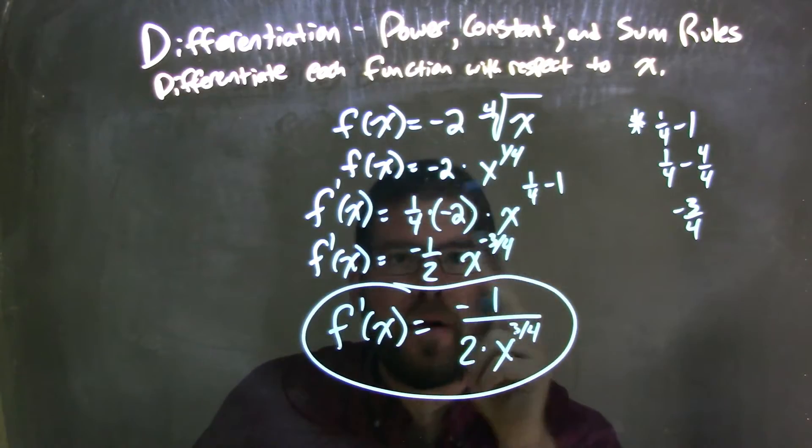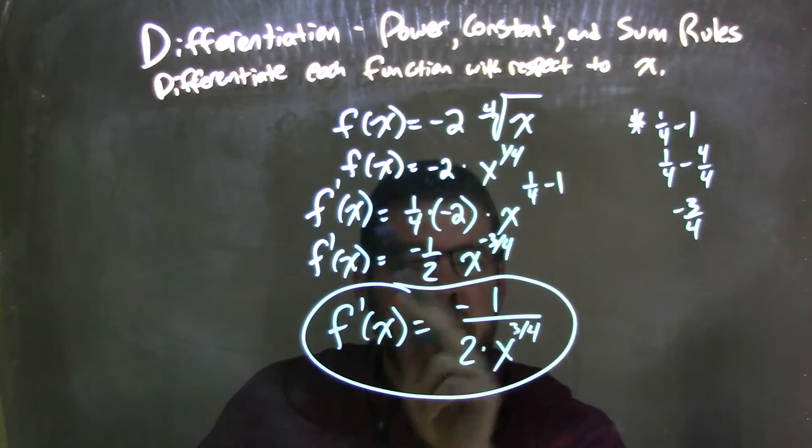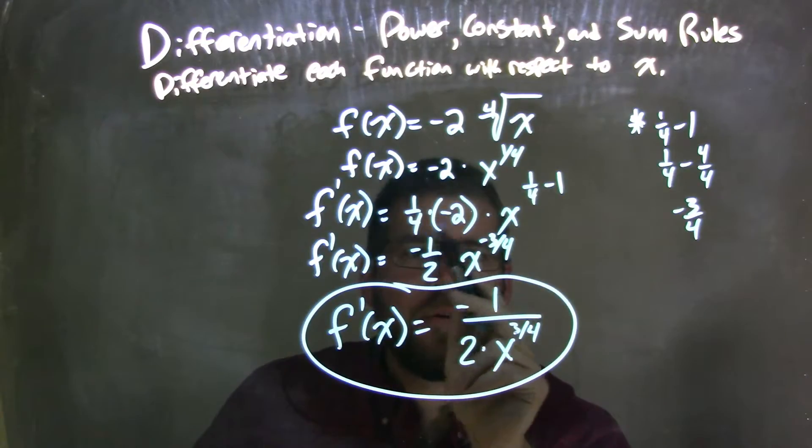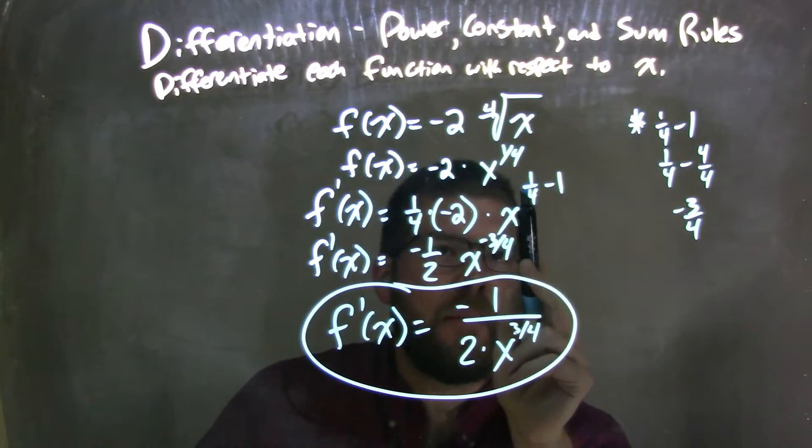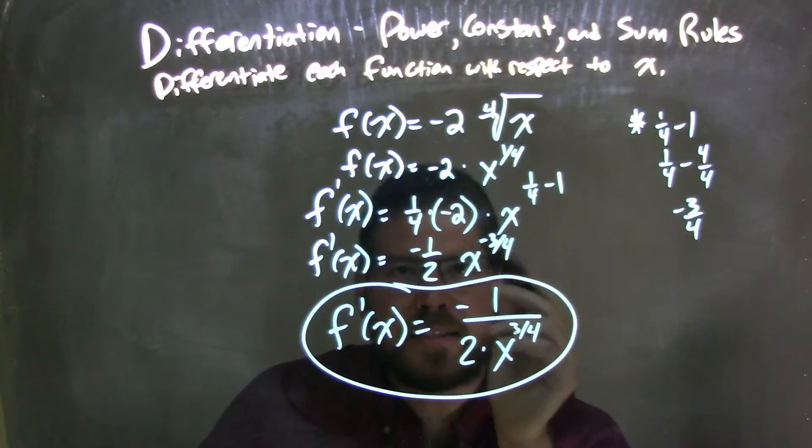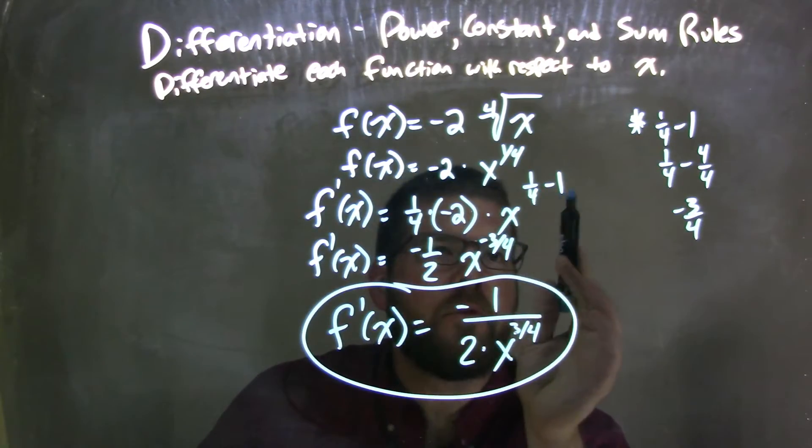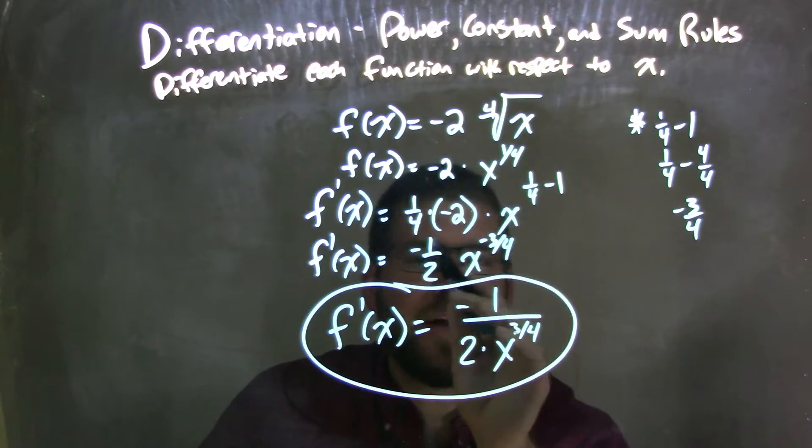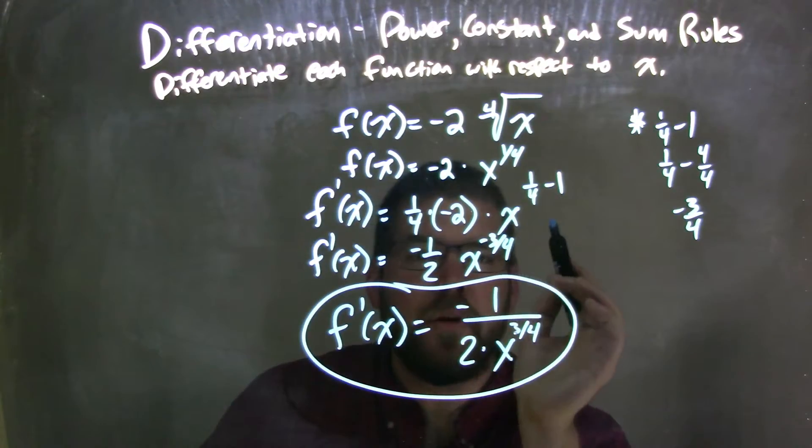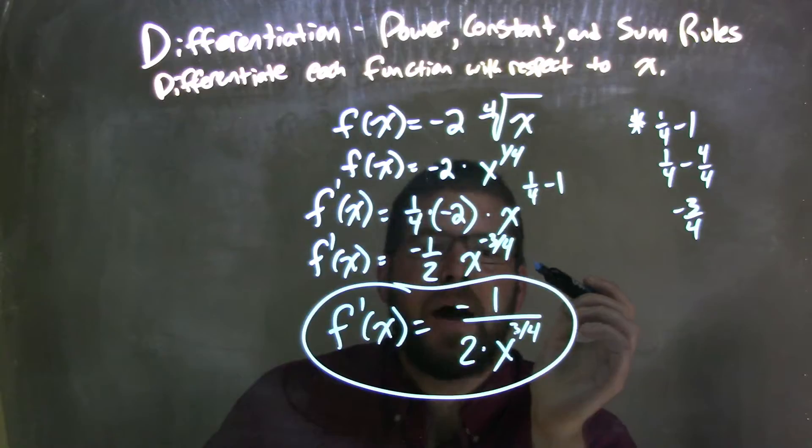From there I can apply the power rule. I brought the one-fourth out front and now I'm taking the derivative. Negative 2, I'm going to one-fourth times negative 2 times x to the, whatever that power was, one-fourth minus 1. If I simplify that, negative one-fourth times negative 2 is a negative one-half. And one-fourth minus 1 was a negative three-fourths. So we have negative one-half x to the negative three-fourths power.